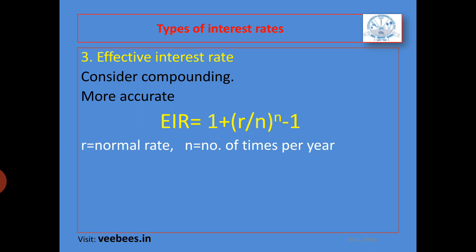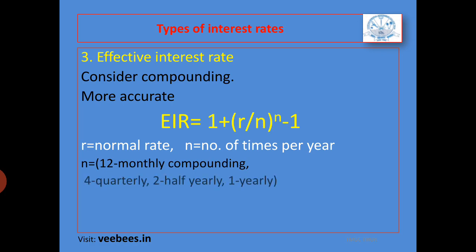How many times per year do you compound? If compounded annually, n = 1. If compounded half-yearly, n = 2. If compounded quarterly, n = 4. If compounded monthly, n = 12. So for annual compounding n = 1, half-yearly n = 2, quarterly n = 4, monthly n = 12.